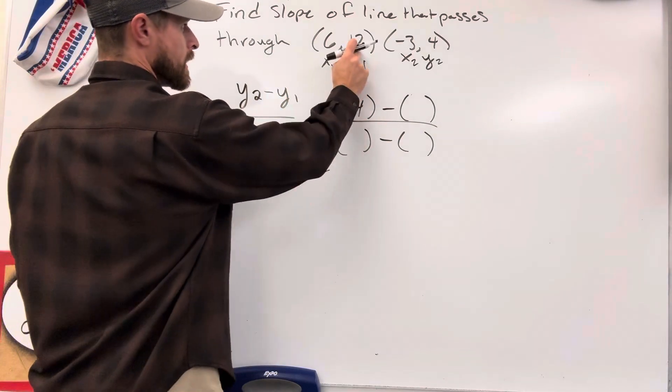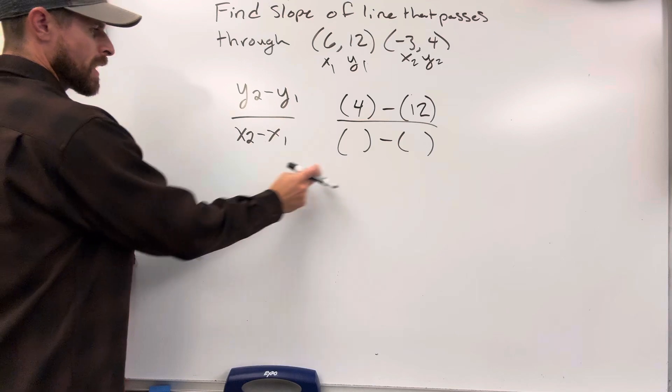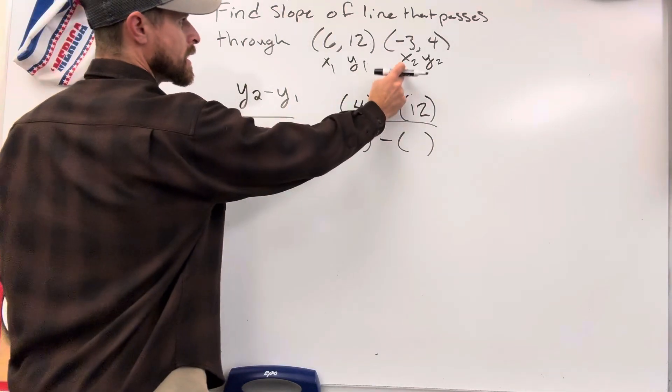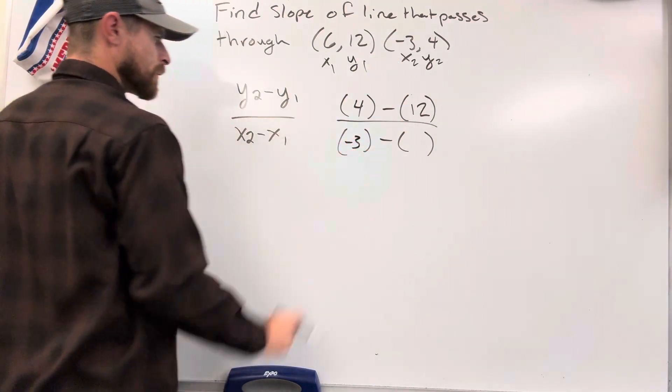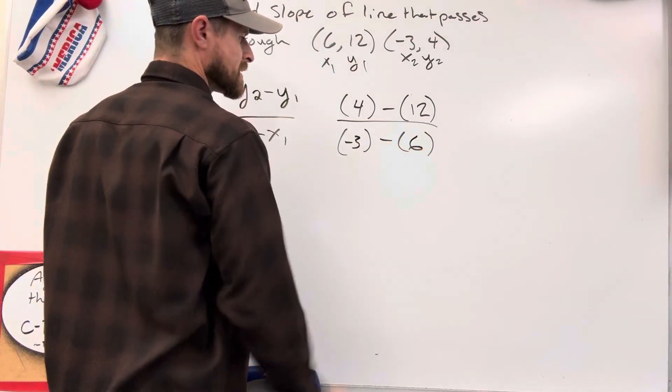Where's my y1? That's a 12, so I'm going to put a 12 in the parenthesis there. x2, bottom left corner, x2 is a negative 3, place a negative 3 right there. And then x1 is a 6, so I'm going to be plugging 6 in here.